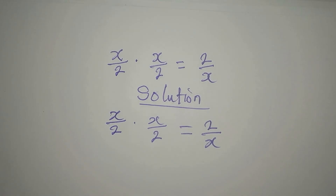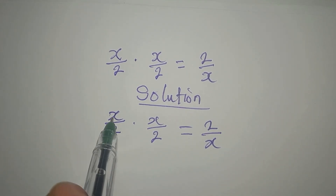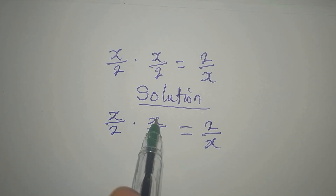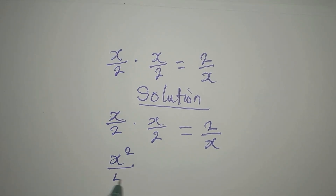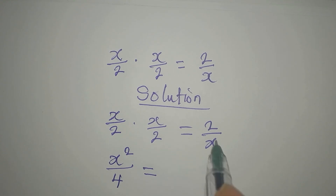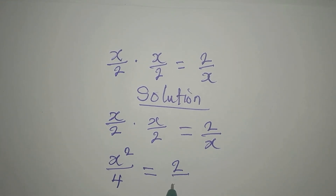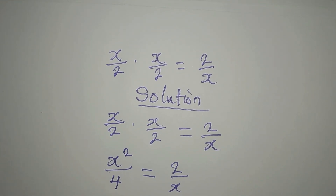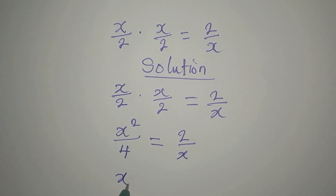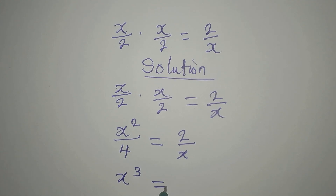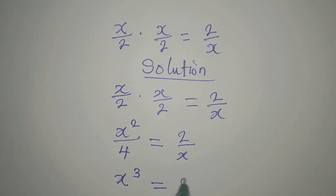Let's begin. From here we have x times x, which will give us x squared over 4, and that is equal to 2 over x. We have to cross multiply as well, so we have x times x squared, that will be x to the power of 3, and is equal to 4 times 2, which is now 8.